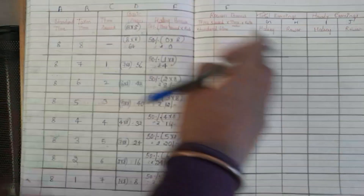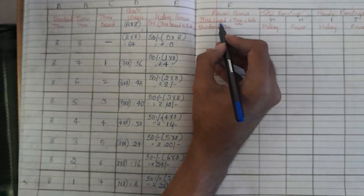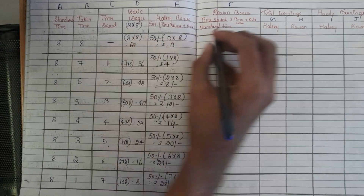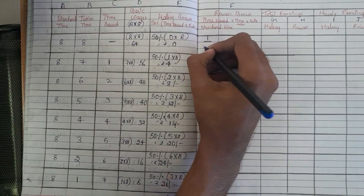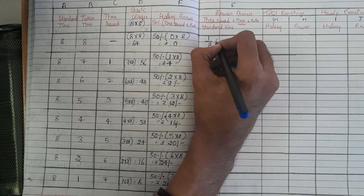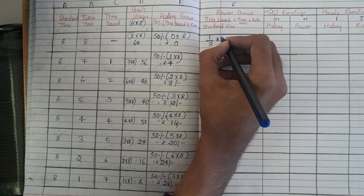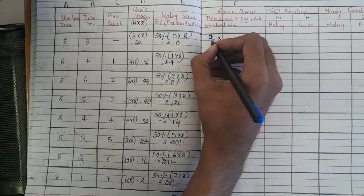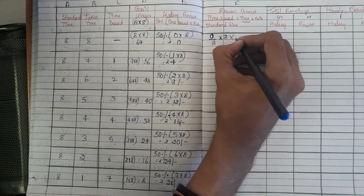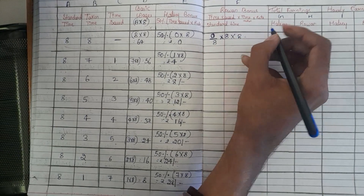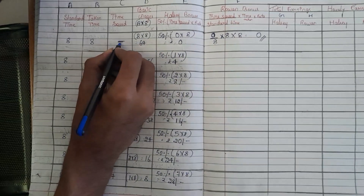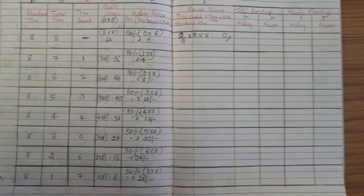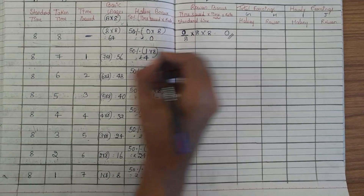Now for the Rowan plan, the formula is: time saved divided by standard time, multiplied by time taken, multiplied by the rate. For the first case, time saved is 0 divided by 8, multiplied by time taken 8, multiplied by rate 8 — so no bonus because no time was saved.